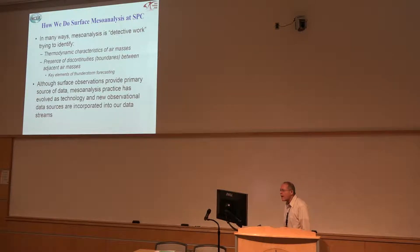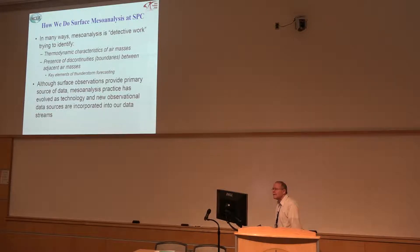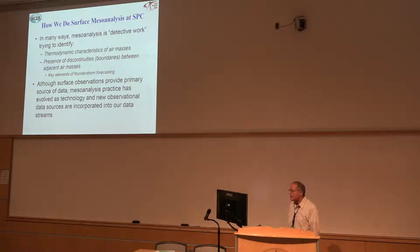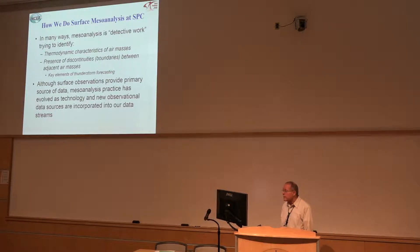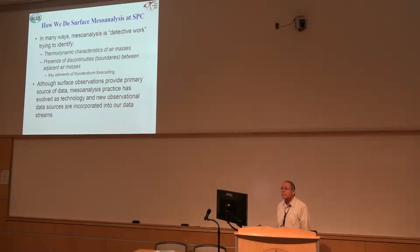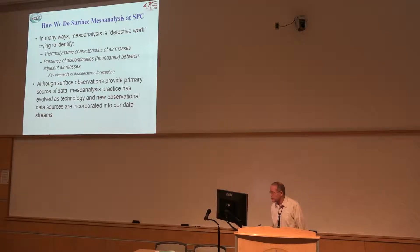We have to find and identify the thermodynamic characteristics of air masses, the presence of discontinuities or boundaries between the air masses. That's a key element. Thunderstorms like to develop where there are boundaries at times. Can we identify those boundaries in the data?